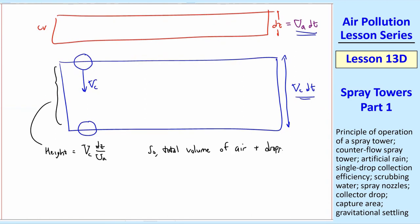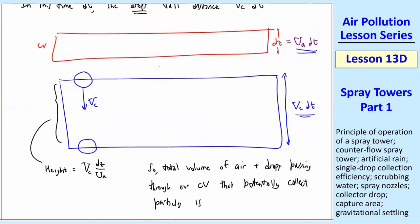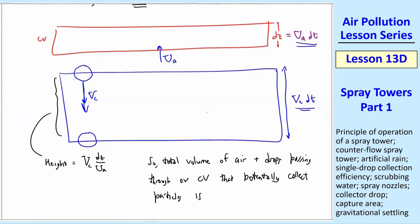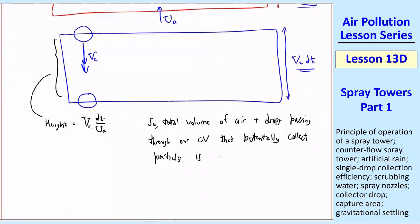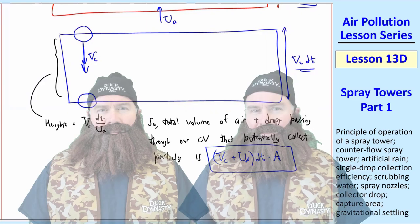So the total volume of air and the collector drops passing through our control volume that potentially collect particles is the sum of these because of the cross flow nature. You have UA going up, and then you have this larger vc coming down. They're going against each other. Think of it as the total time that air is exposed to particles as dt. The total volume where we have potential collection by the particles is thus the sum of these two speeds, vc plus UA times dt times cross-sectional area A. You have to think about this a little bit to convince yourself that that's true.